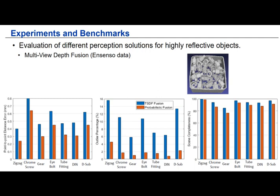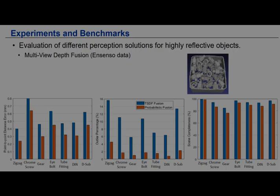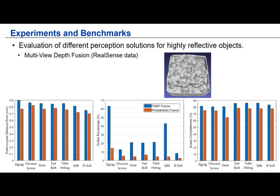We tested two methods for evaluating depth fusion: the standard TSDF fusion and the probabilistic fusion proposed in our previous work. We first show the performance on the Ensenso data. We can see that compared to TSDF fusion, the probabilistic approach reconstructs the object with fewer outliers and higher accuracy. For the RealSense data, we can see the same tendency where the probabilistic approach works better, but the overall performance for the RealSense data is much worse than the Ensenso.